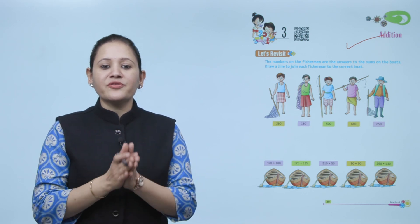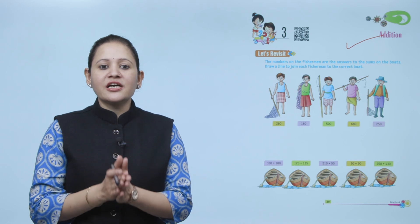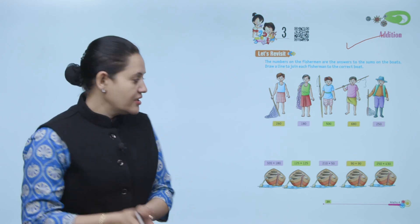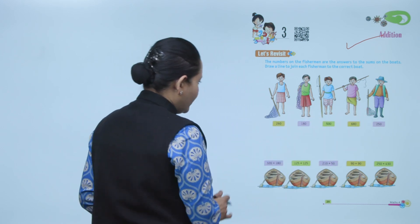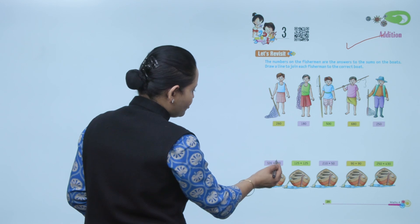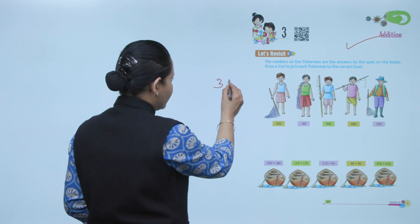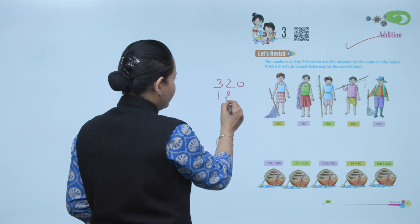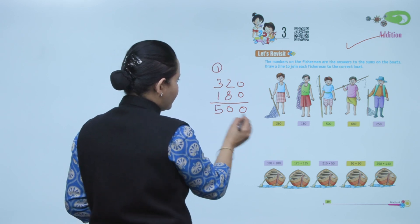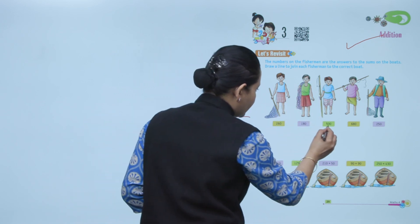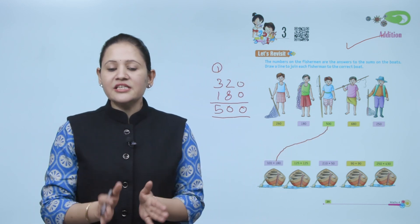Let's revisit the numbers on the fishermen. The answer to the sums is on the boats. Draw a line to join the fisherman to the correct boat. Some numbers are given to each fisherman. We have to add these two numbers and join with the correct answer. For example, 320 plus 180, the sum is 500, so this boat belongs to this fisherman. We'll join it like this.